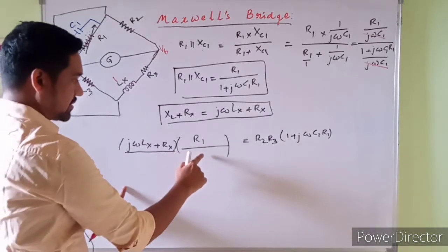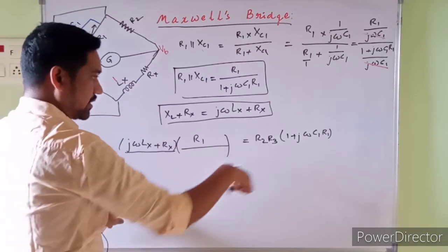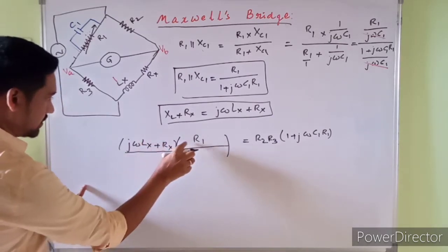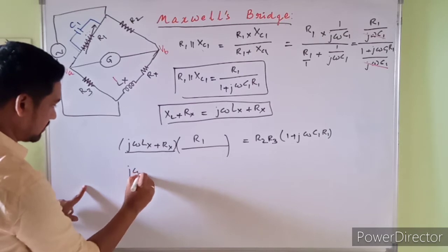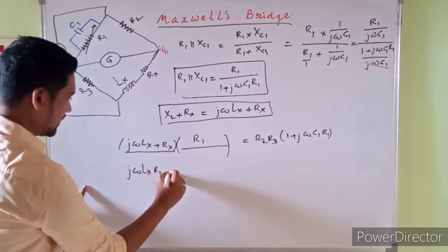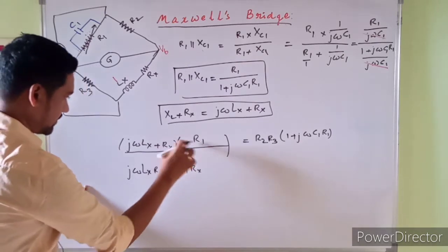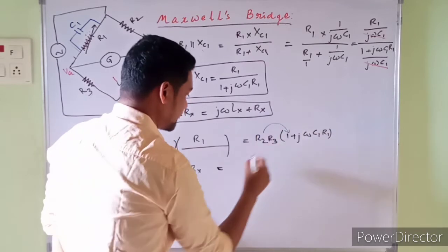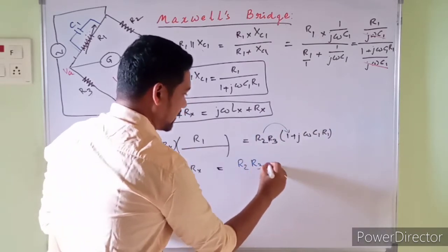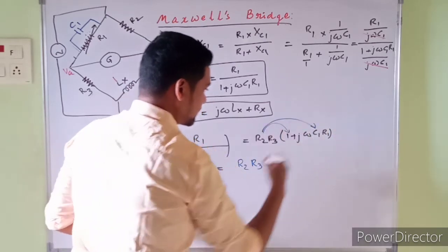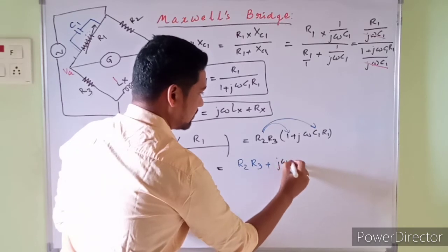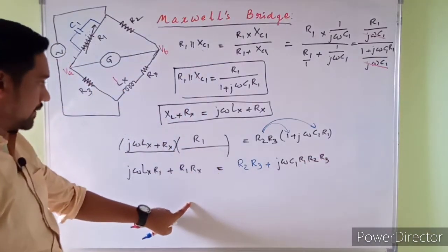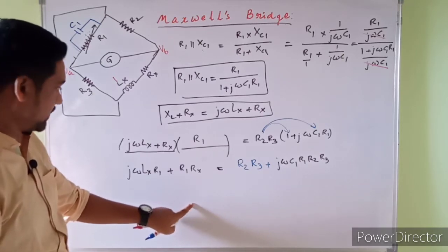Expanding the left-hand side: (jωLX + RX) × R1 × (1 + jωC1R1) gives jωLX·R1 + R1·RX on one side. On the right-hand side, multiplying out gives R2·R3 + jωC1·R1·R2·R3. Hope this is correct — cross-check. We are almost done with the proof.